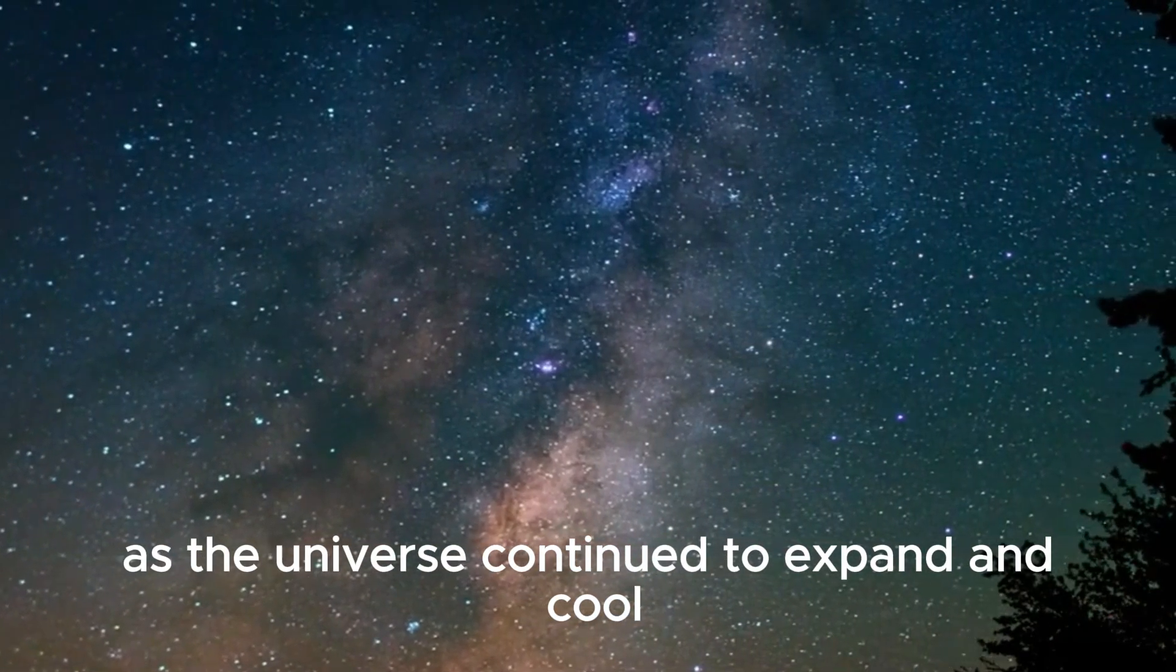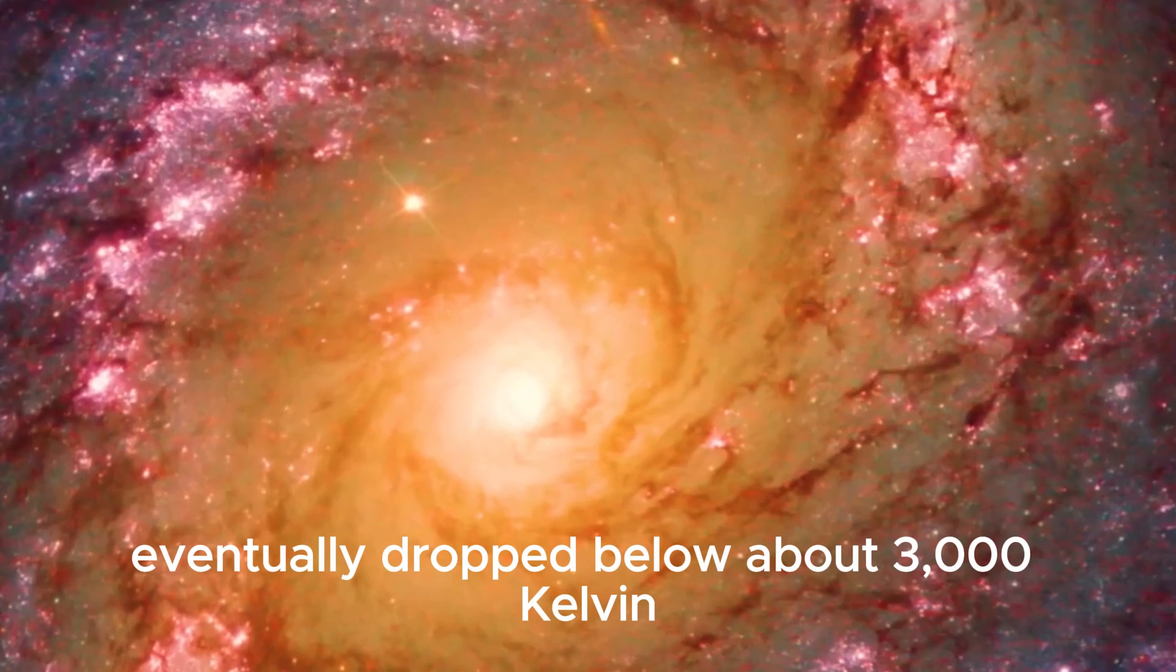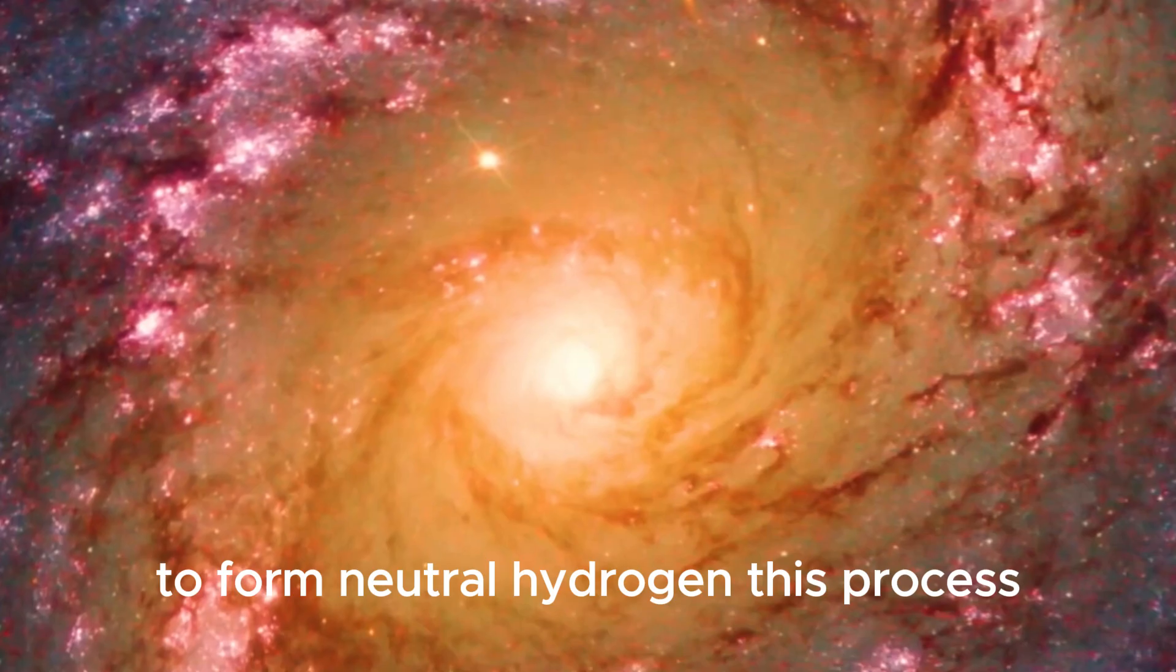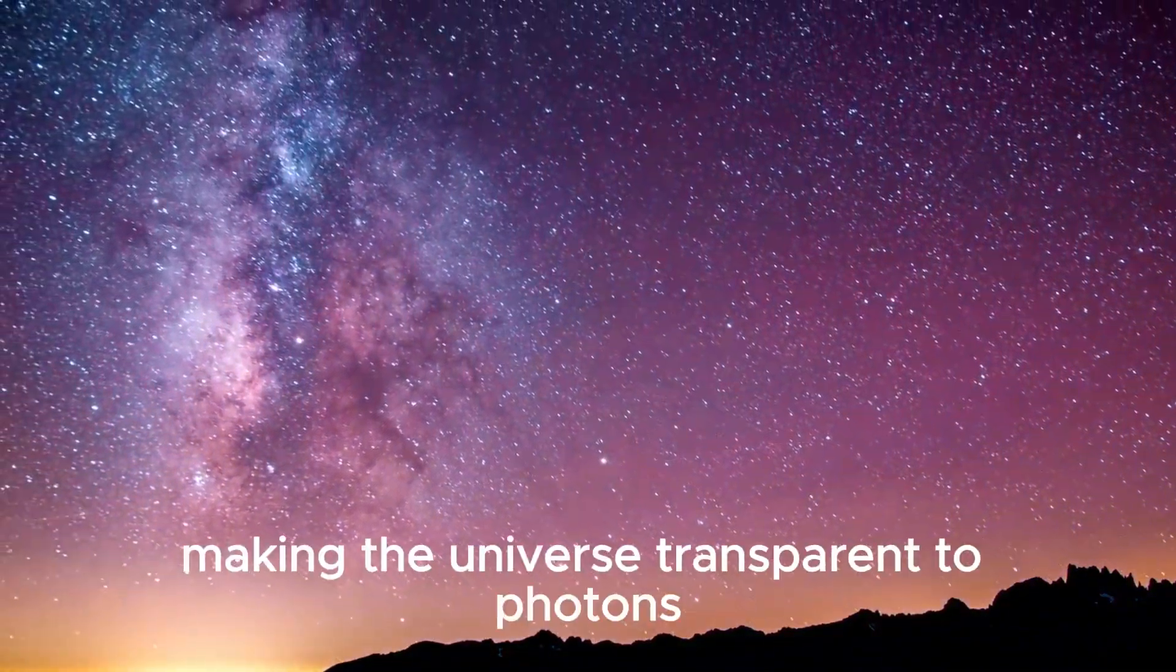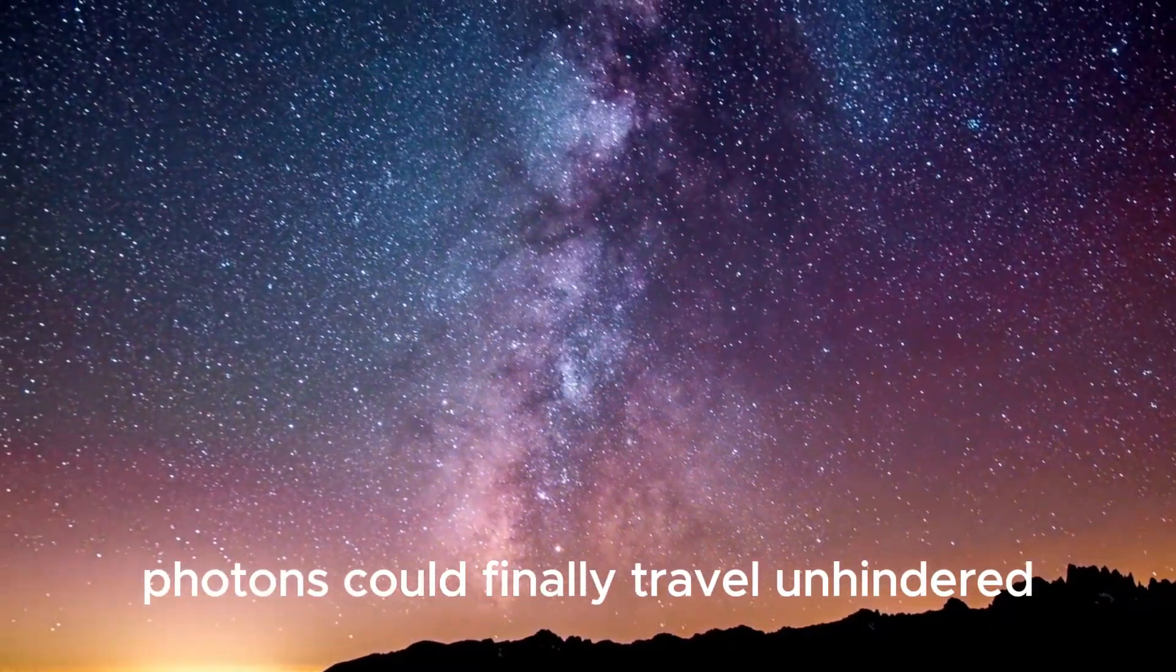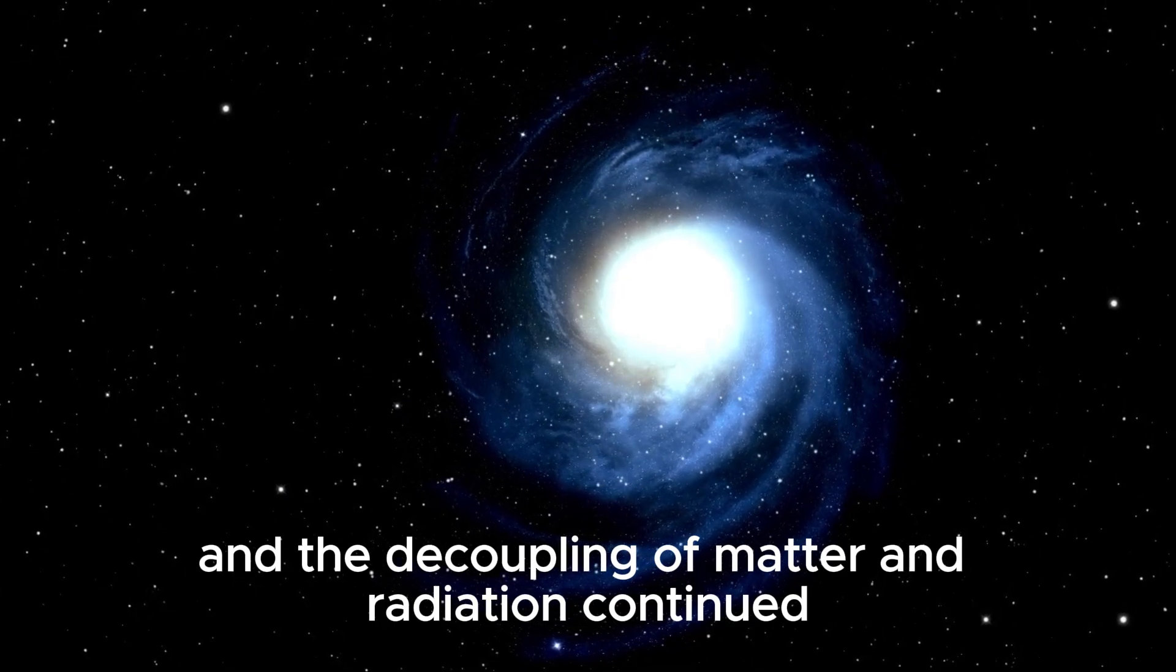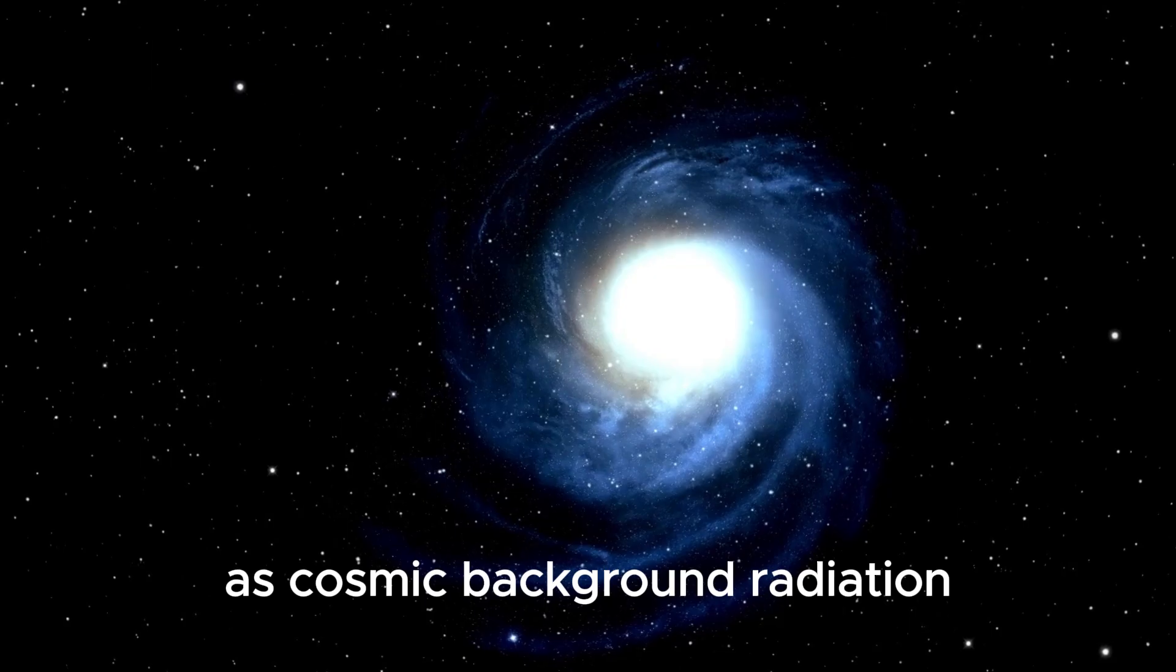As the universe continued to expand and cool, temperatures eventually dropped below about 3000 Kelvin, allowing electrons to combine with protons to form neutral hydrogen. This process drastically reduced the number of free electrons, making the universe transparent to photons. Photons could finally travel unhindered, light was created, and the decoupling of matter and radiation continued. These released photons are what we see today as cosmic background radiation.